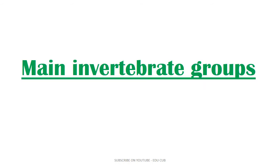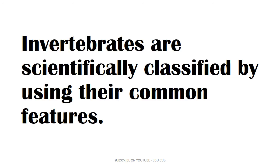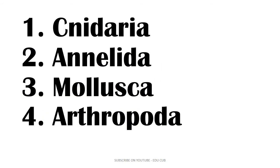Let's see the main invertebrate groups. Invertebrates are scientifically classified using their common features. Let's see the four groups we have to learn in this lesson: Cnidaria, Annelida, Mollusca, and Arthropoda.